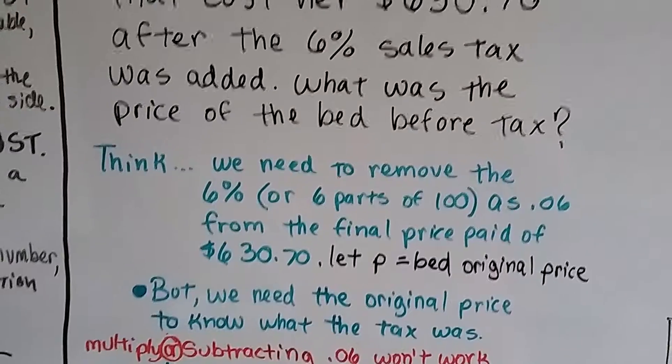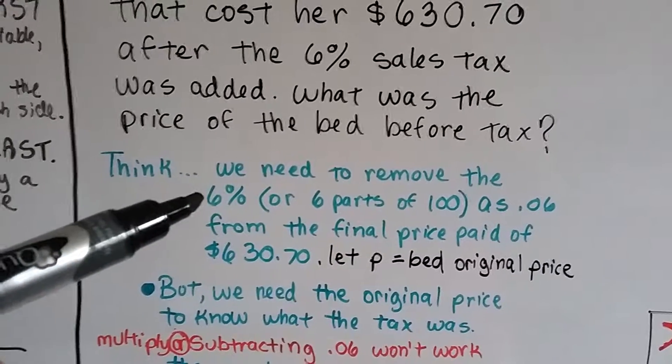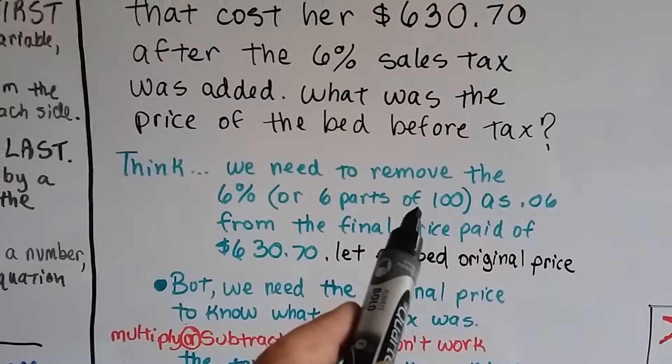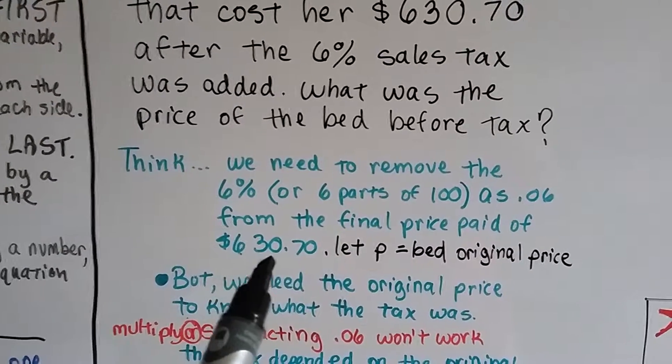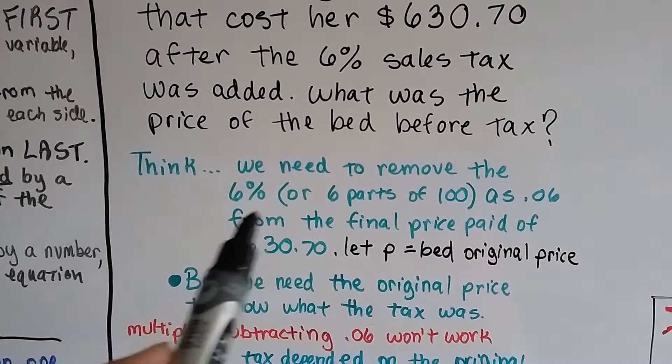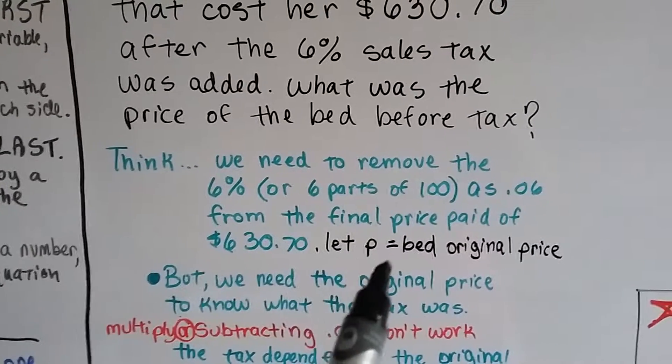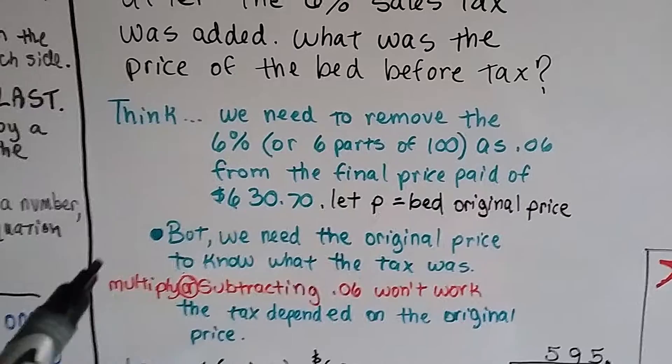We need to think. We need to remove that 6% tax. That's six parts of 100 and we can write it as .06 because it's six hundredths. We need to remove that from the $630.70. Whatever that 6% sales tax amount was. We're going to let P equal the price, the bed's original price on the price tag.